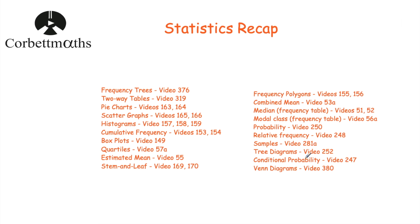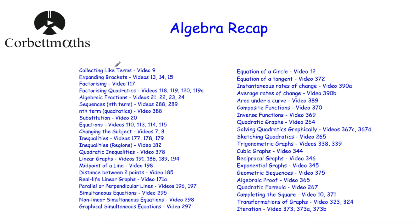Conditional probability: where probabilities change — for instance, taking two pieces of fruit from a bag — so you need to update the probabilities as you go through the question. Venn diagrams: know how to complete them and know the Venn diagram notation.